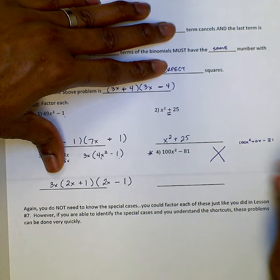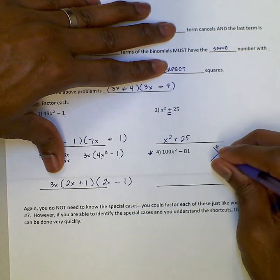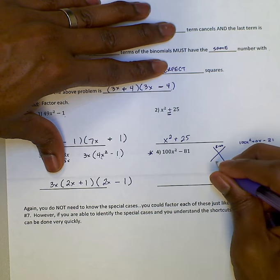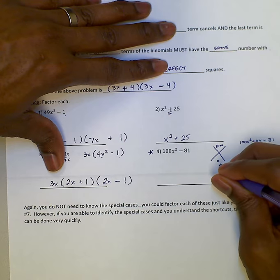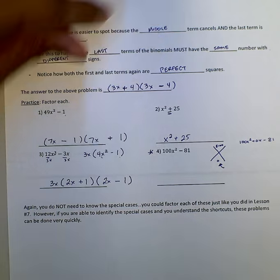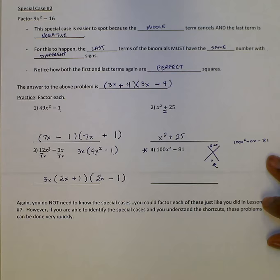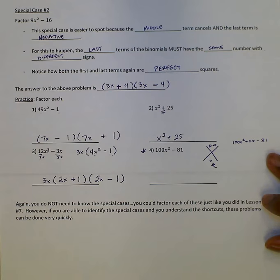And do the same box method that we had done with any other problem. Try to find two numbers that multiply to give us 8,100. And at the same time, it adds to give us 0. Now, here's the big clue for us. If two numbers add to give us 0, when we add them together, we get 0. Then that should be a hint that, hey,